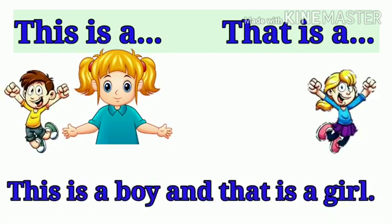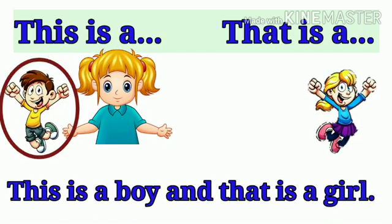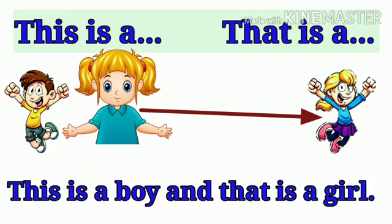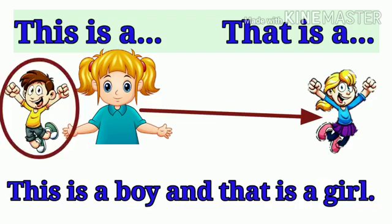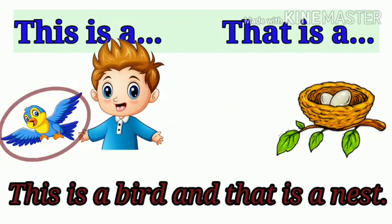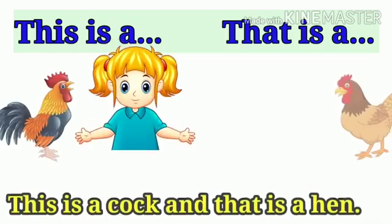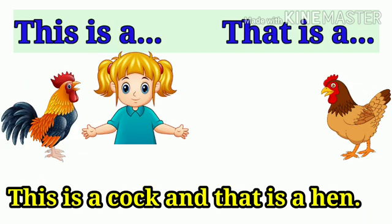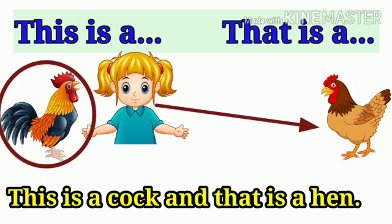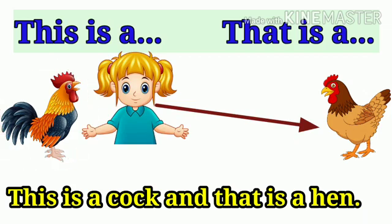Next: this is a boy and that is a girl. Next: this is a bird and that is a nest. Next: this is a cock and that is a hen.